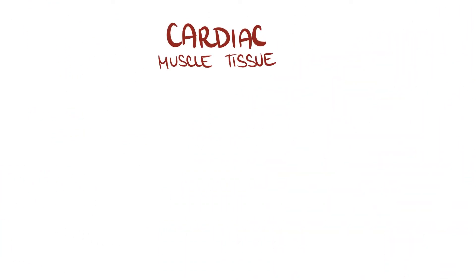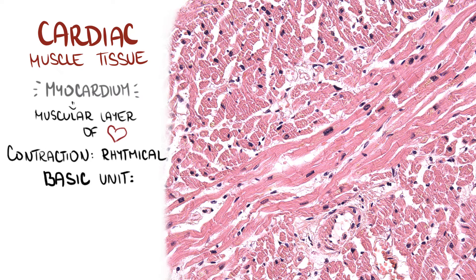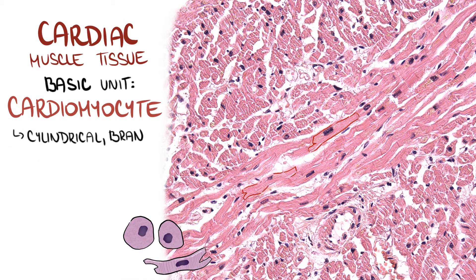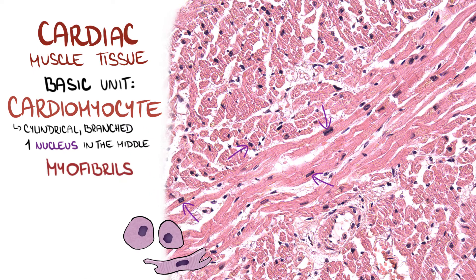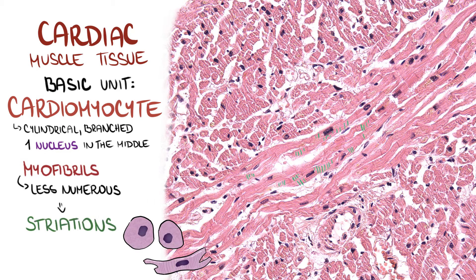Cardiac muscle tissue makes up our myocardium, the muscular layer of our heart. Its contraction is rhythmical without any voluntary control. The basic unit of cardiac muscle tissue is a cardiomyocyte. Cardiomyocytes are cylindrical, often branched cells with one nucleus in the middle. They contain myofibrils, but they are less numerous than in skeletal muscle. In longitudinal sections, striations are thus less apparent, but still visible at higher magnifications.